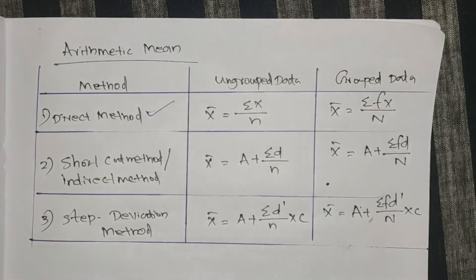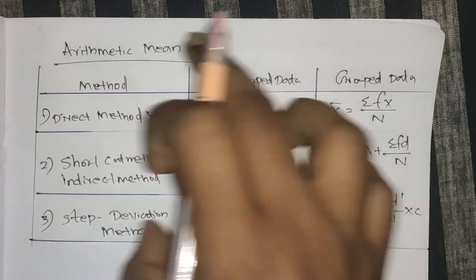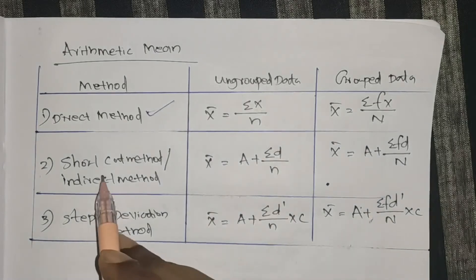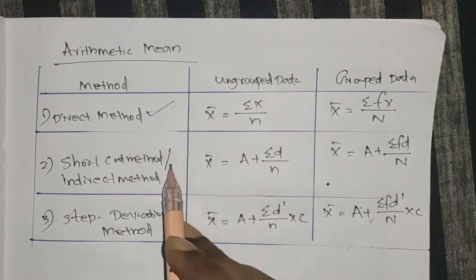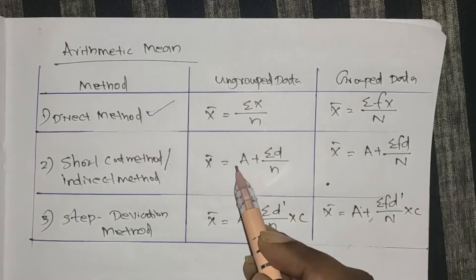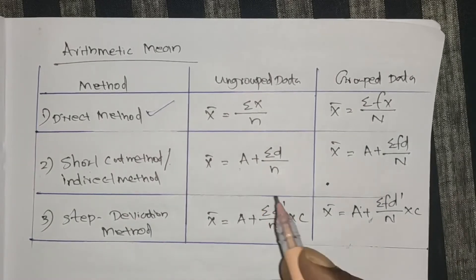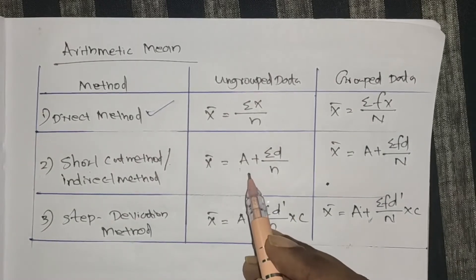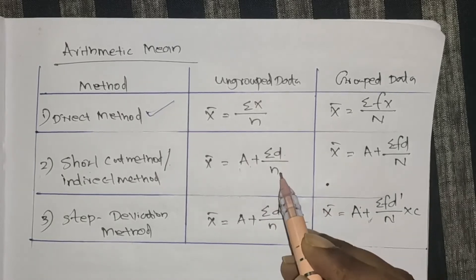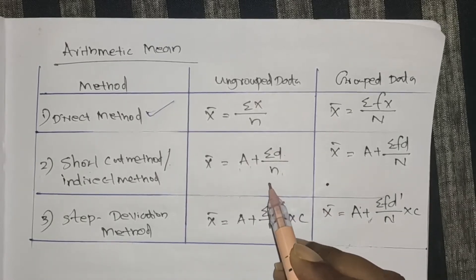The shortcut method is the step deviation method. The formulas are created in this table. In the shortcut method, we will calculate the mean. The formula is: x̄ = A plus sigma d divided by n.